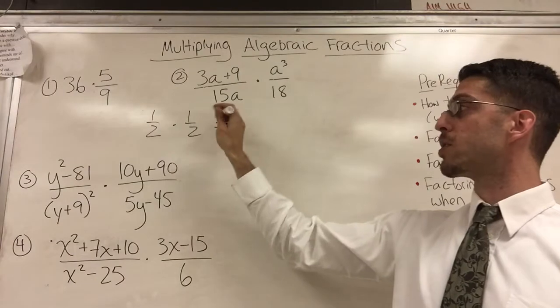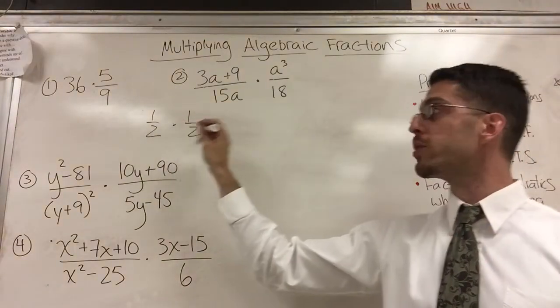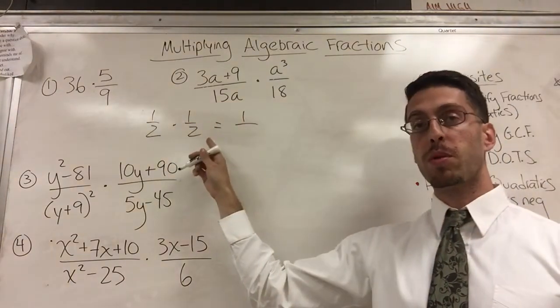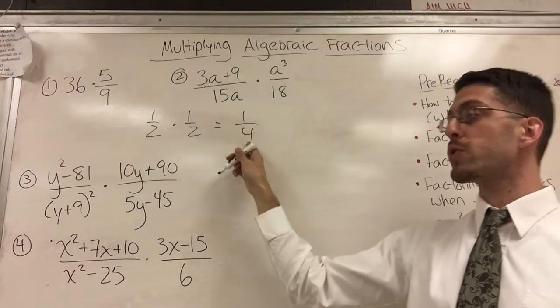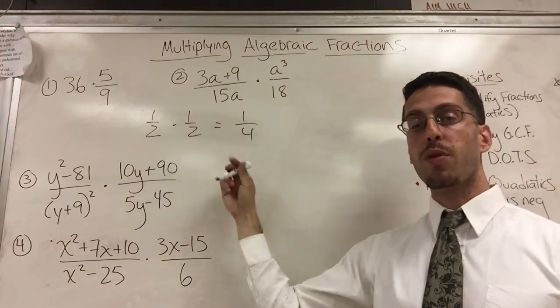Alright, so half of half is 1 times 1. I'm going to multiply the numerators. I get 1. 2 times 2. I multiply the denominators. I get 4. So there's proof that half of a half is a fourth or a quarter.